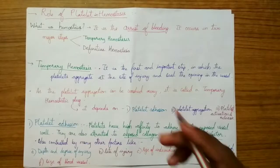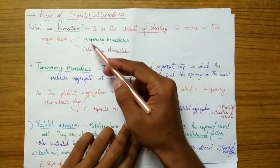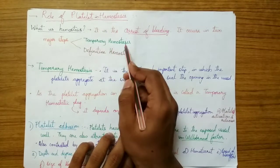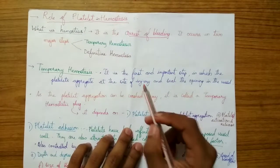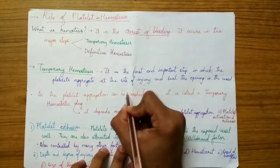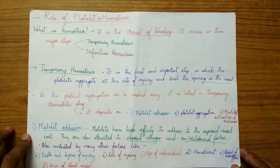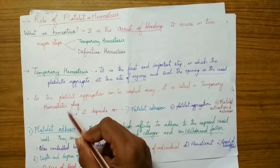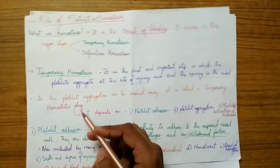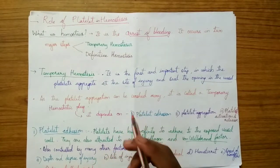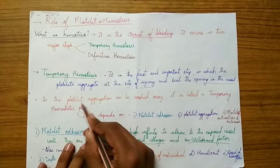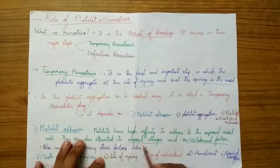Hemostasis is the arrest of bleeding or the formation of a clot, occurring in two major steps: temporary hemostasis and definitive hemostasis. In temporary hemostasis, platelets aggregate at the site of injury and seal the opening in the vessel. Since the platelet aggregation can be washed away, it is called a temporary hemostatic plug. It is called temporary because there is no formation of a fibrin clot, so the clot is not stable and can be washed away — it is called a platelet thrombus.